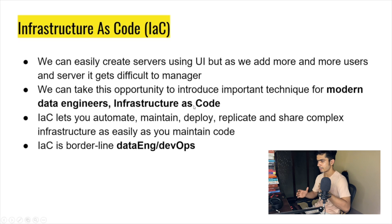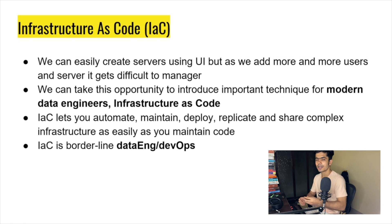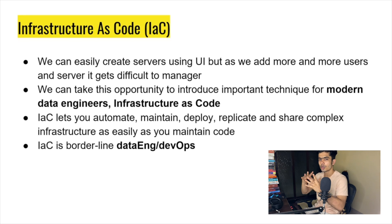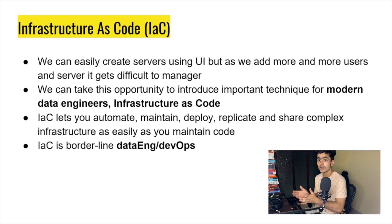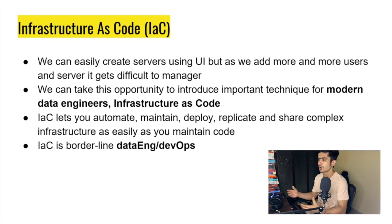So what we can do is use modern data engineering and adopt a concept called Infrastructure as Code. This basically allows you to automate, maintain, deploy, replicate, and share your entire infrastructure using code. It's a borderline between data engineering and DevOps. You can create a code template — for example, for creating a Redshift cluster — and share that template with someone else so they can also create or delete the cluster without managing everything through the UI.